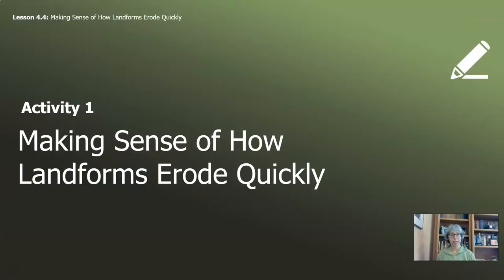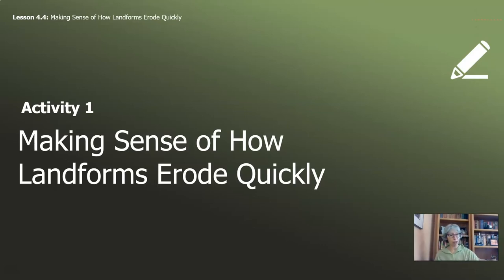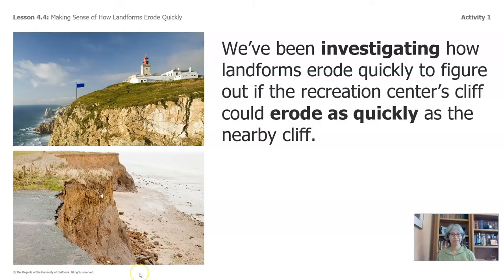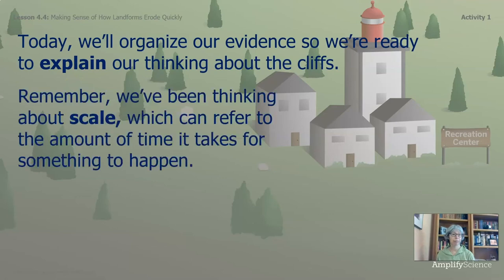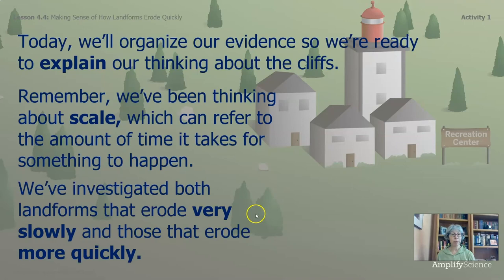This video has two activities. If you have your packet handy, that is wonderful, and if you don't, remember, any paper and a writing utensil will do just fine. We've been investigating how landforms erode quickly to figure out if the recreation center's cliff could erode as quickly as the nearby cliff. Today, we'll organize our evidence so we're ready to explain our thinking about the cliffs. Remember, we've been thinking about scale, which can refer to the amount of time it takes for something to happen. We've investigated landforms that erode very slowly and those that erode more quickly.